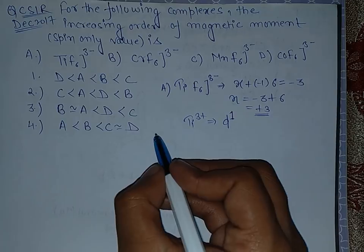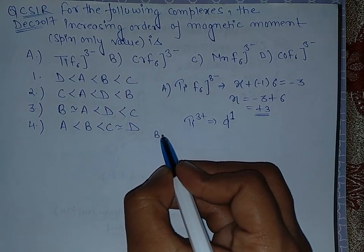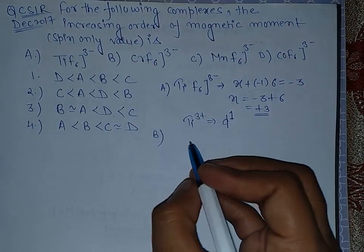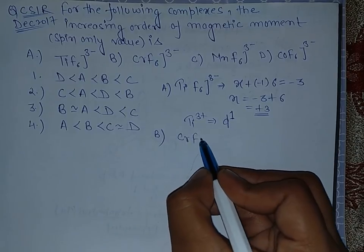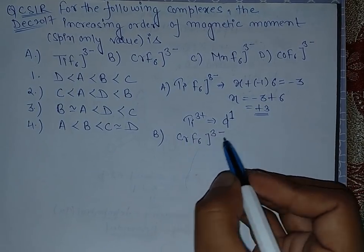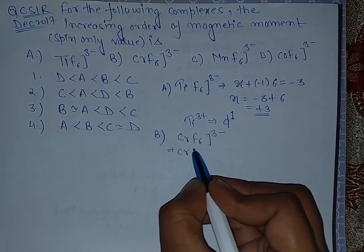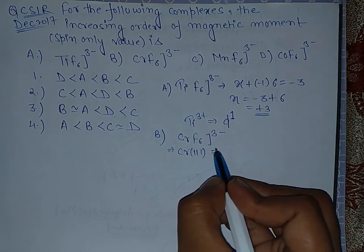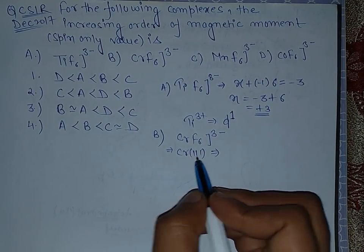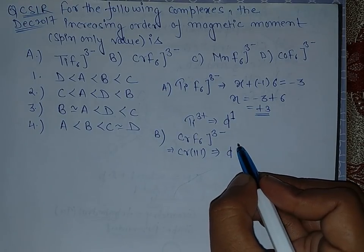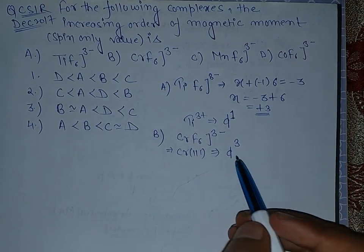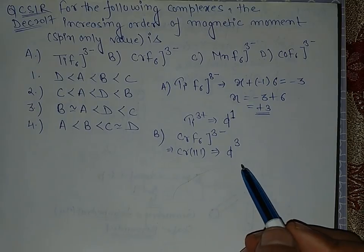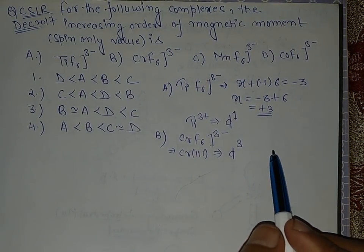Now let's proceed to option B. This is CrF6 3 negative. Again, chromium is in +3 oxidation state. That means it will have 3 D electrons, and all will be unpaired.